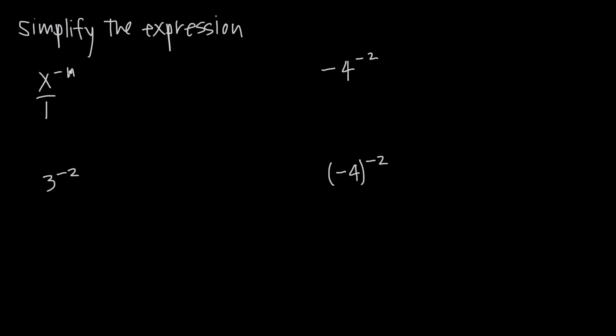So really, we have x to the negative n in our numerator. When we have a negative exponent and we want to make it a positive exponent, all we do is if the value is in the numerator, we move it to the denominator and the exponent becomes positive. So this is going to be equal to 1 over x to the positive n, and the n became positive because we took this x to the negative n value and we moved it to the denominator.